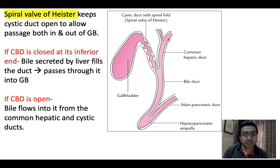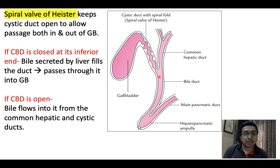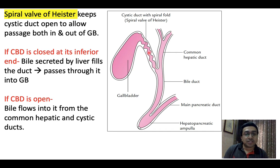This schematic diagram shows the spiral valve of Heister clearly. Due to its presence, if the CBD is closed at its inferior end, bile secreted by the liver fills the duct and passes through into the gallbladder. If the CBD is open, bile flows into it from the common hepatic and cystic ducts. The spiral valve thus allows bile to flow to and from the gallbladder as the situation requires.